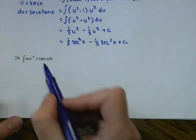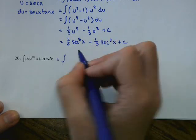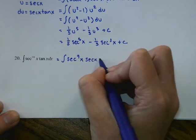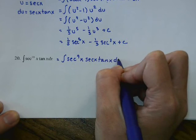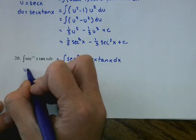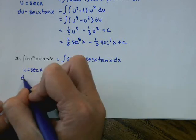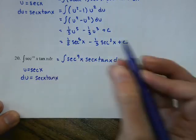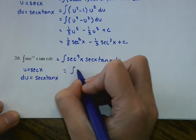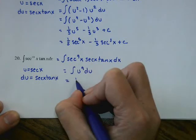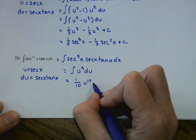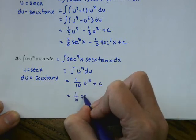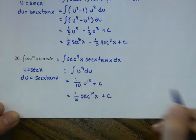For the integral of secant to the tenth x times tangent x: peel off a secant tangent factor, rewriting as secant to the ninth x times secant x tangent x. Let u equal secant x, du equals secant x tangent x dx. The integral becomes u to the ninth du, giving one tenth u to the tenth plus C, or one tenth secant to the tenth x plus C.